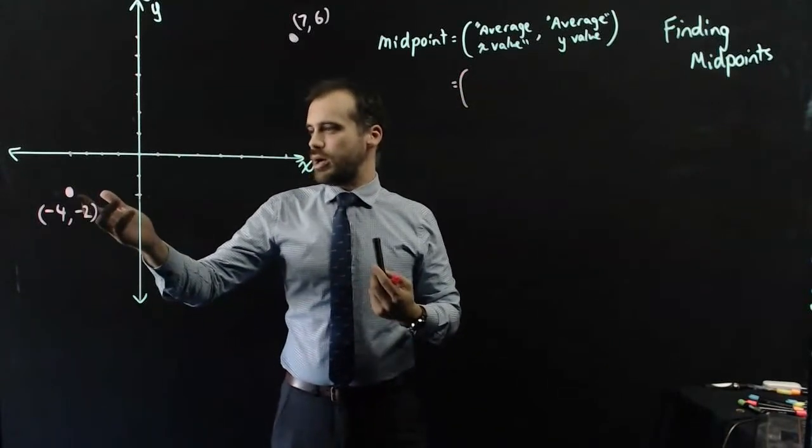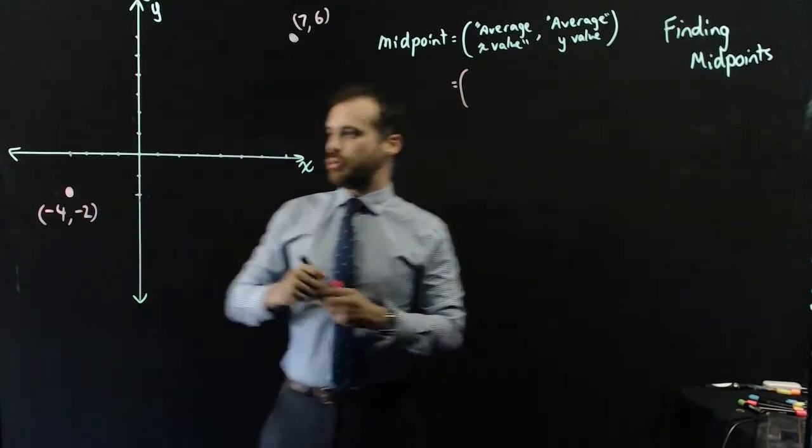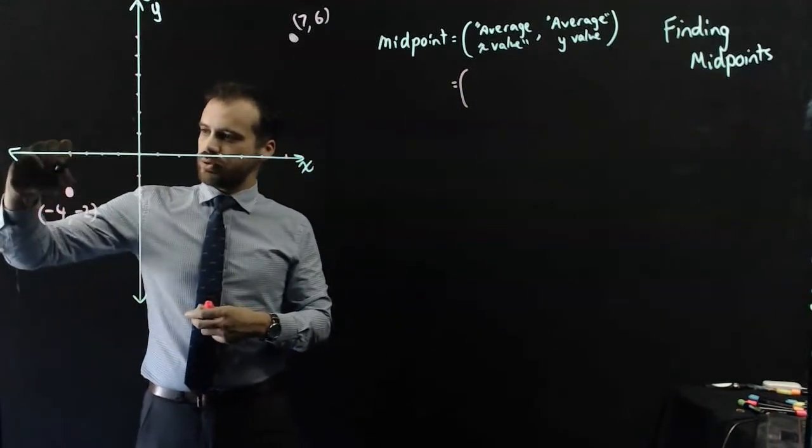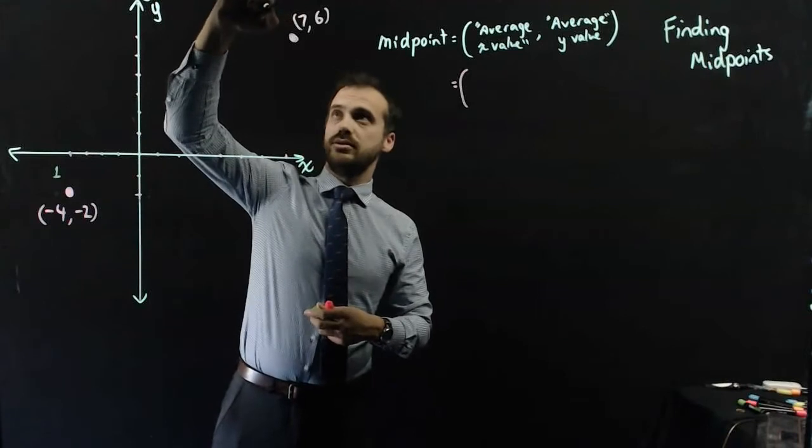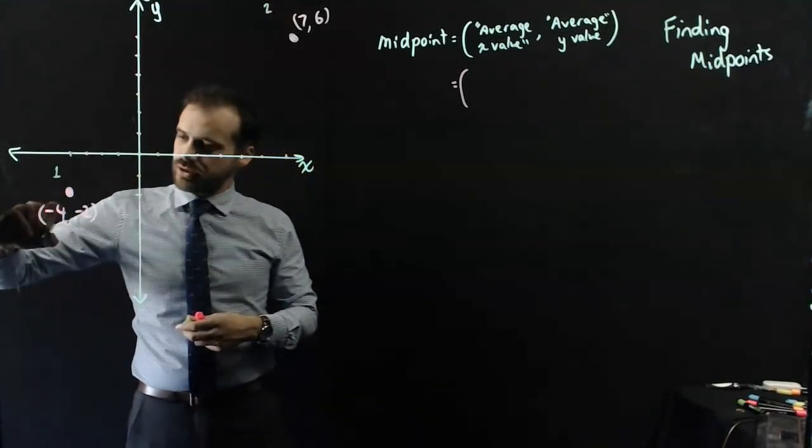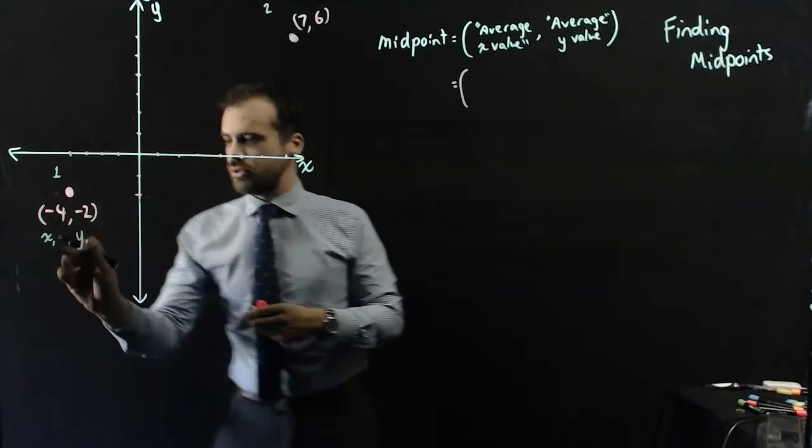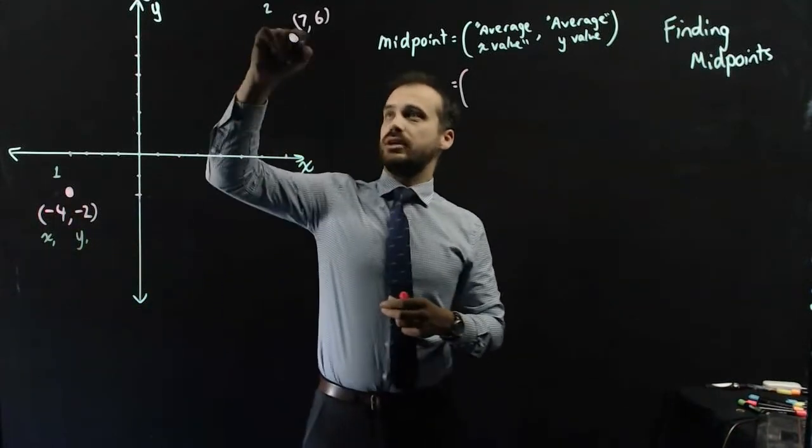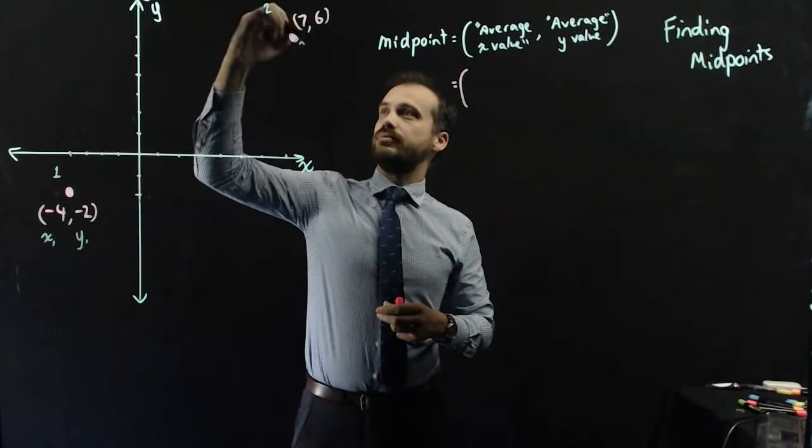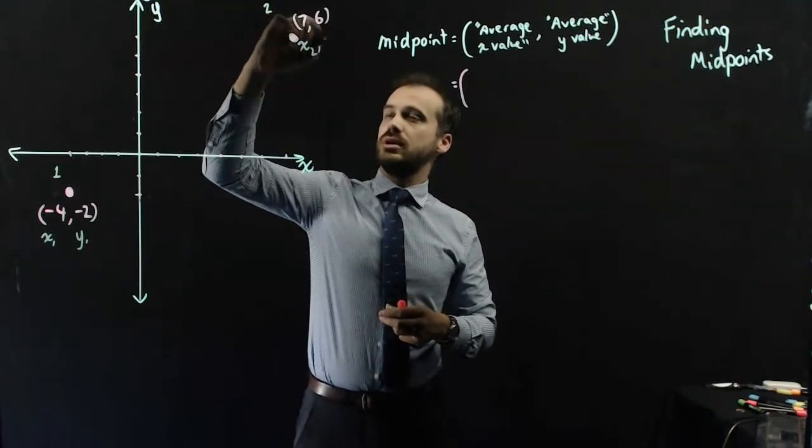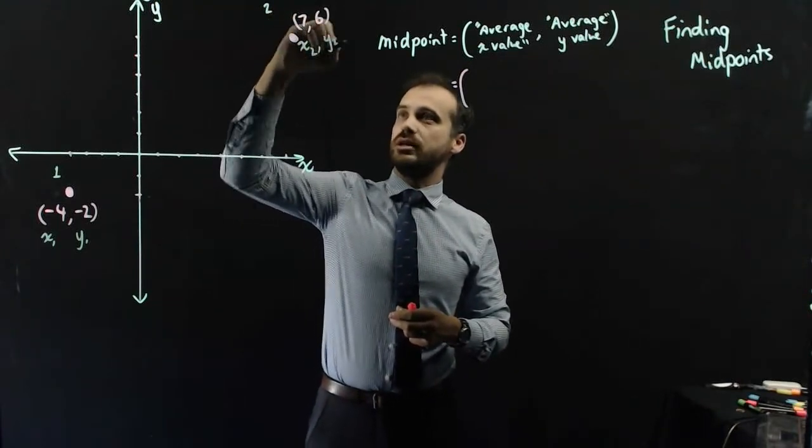I'm going to call this point 1, and I'm going to call this point 2. If this is point 1, and this is point 2, I can call this value x1, and I can call this value y1. And I can call this value x2, and I can call this value y2.